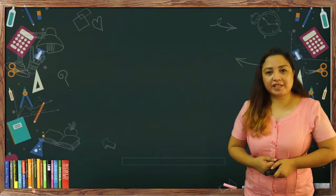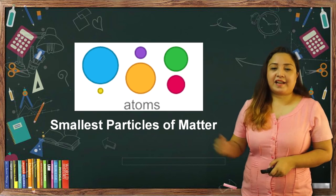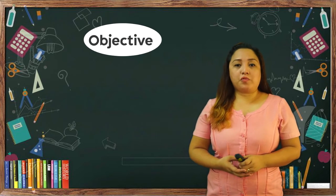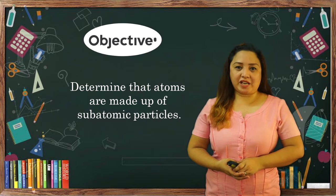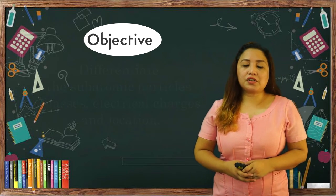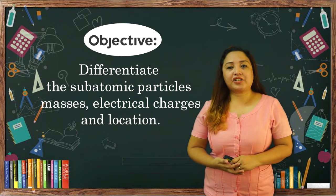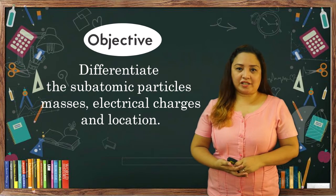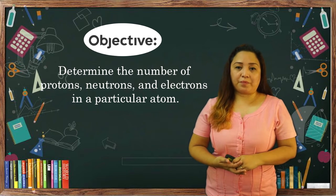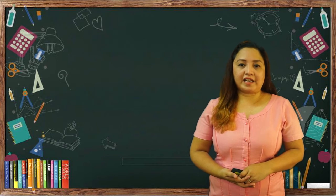Now, which of these particles is the smallest? It is atoms. For today's session, we will determine that atoms are made of subatomic particles. We will also differentiate the particles according to their masses, electrical charges, and location. And lastly, we will determine the number of protons, electrons, and neutrons in a specific atom.